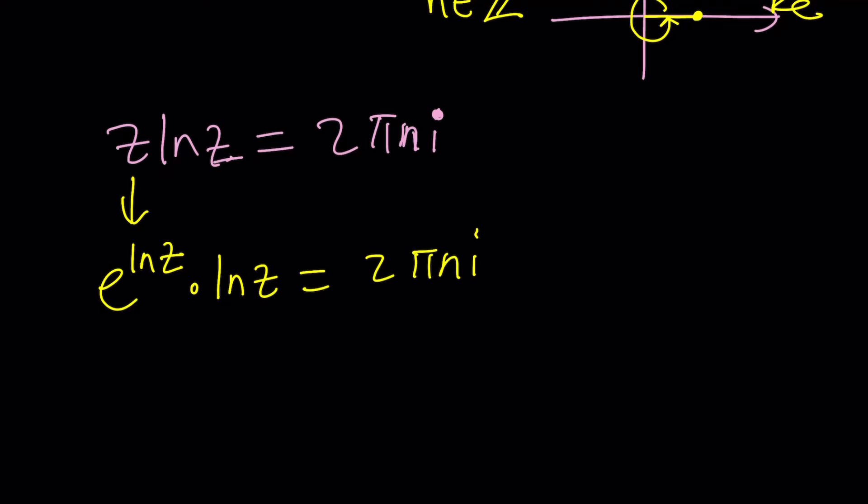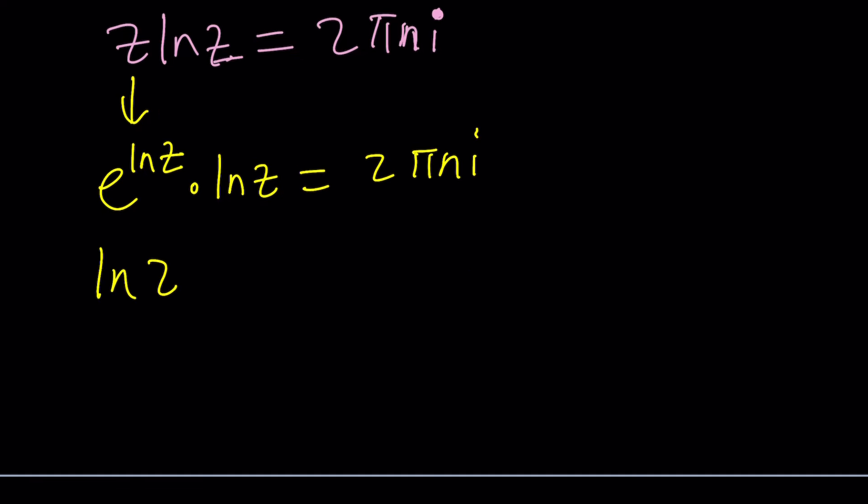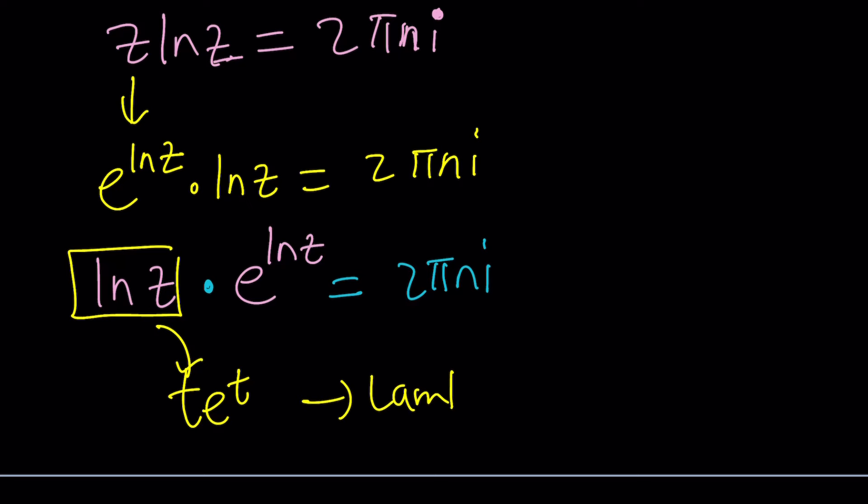Does this look better? Let's switch ln z and e to the ln z so we can write it as ln z times e to the power ln z equals two pi n i. Does this look familiar? If you said yes, it should be like t e to the t, right? This is gonna be my t here. What does that look like? Lambert's W function.